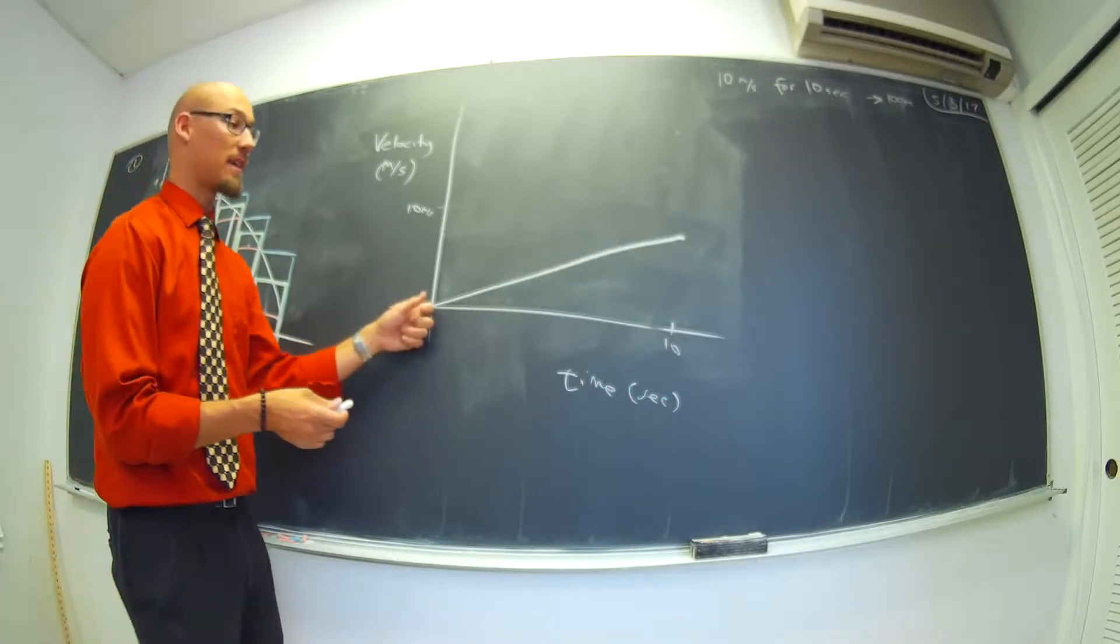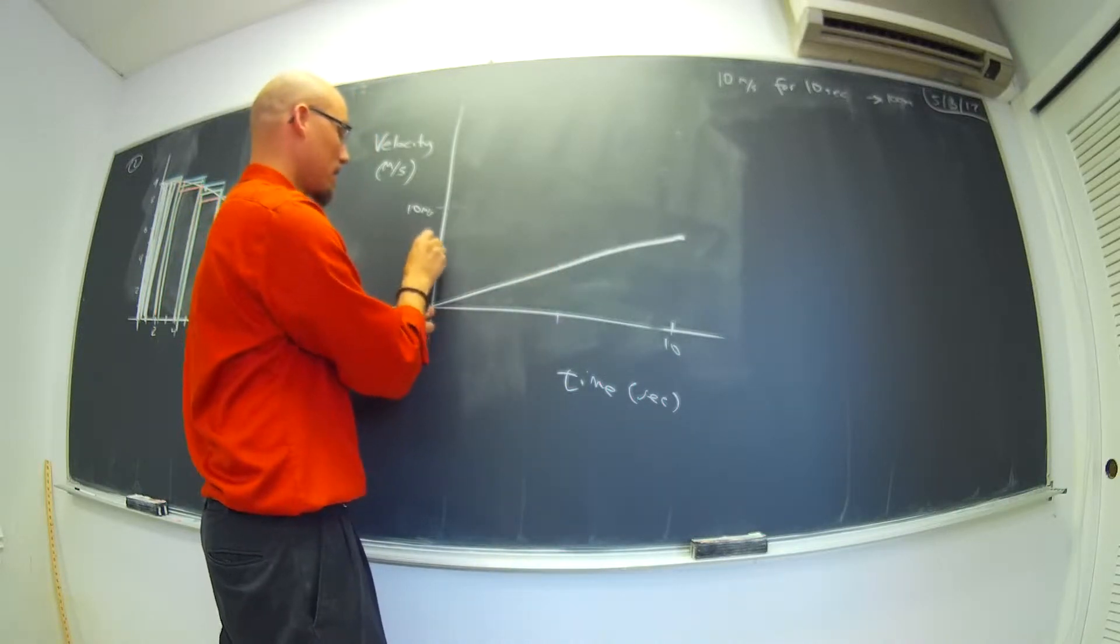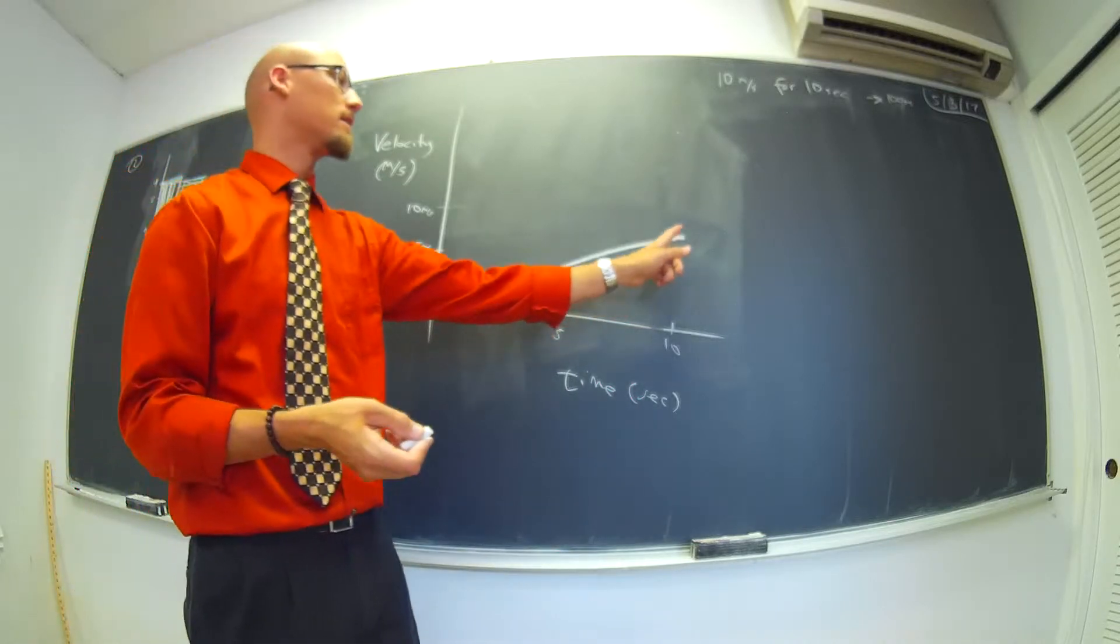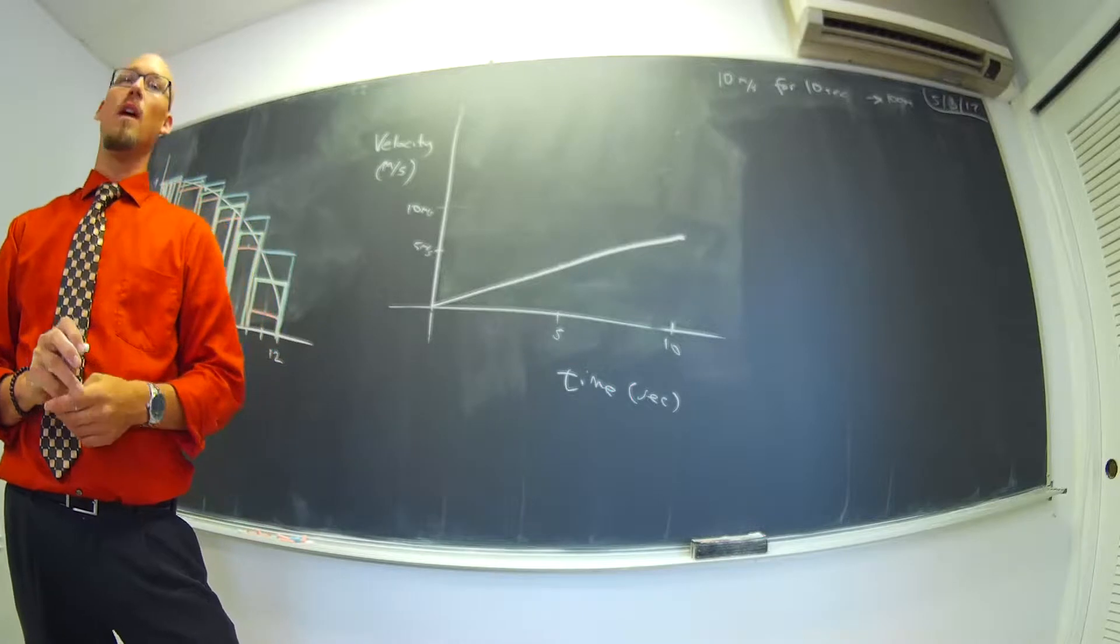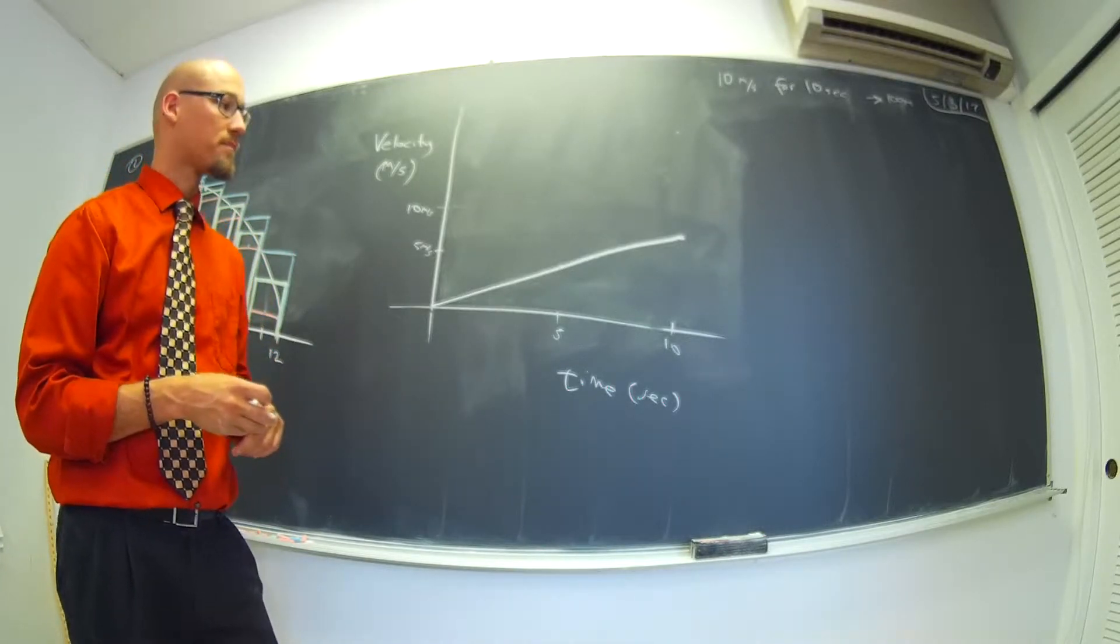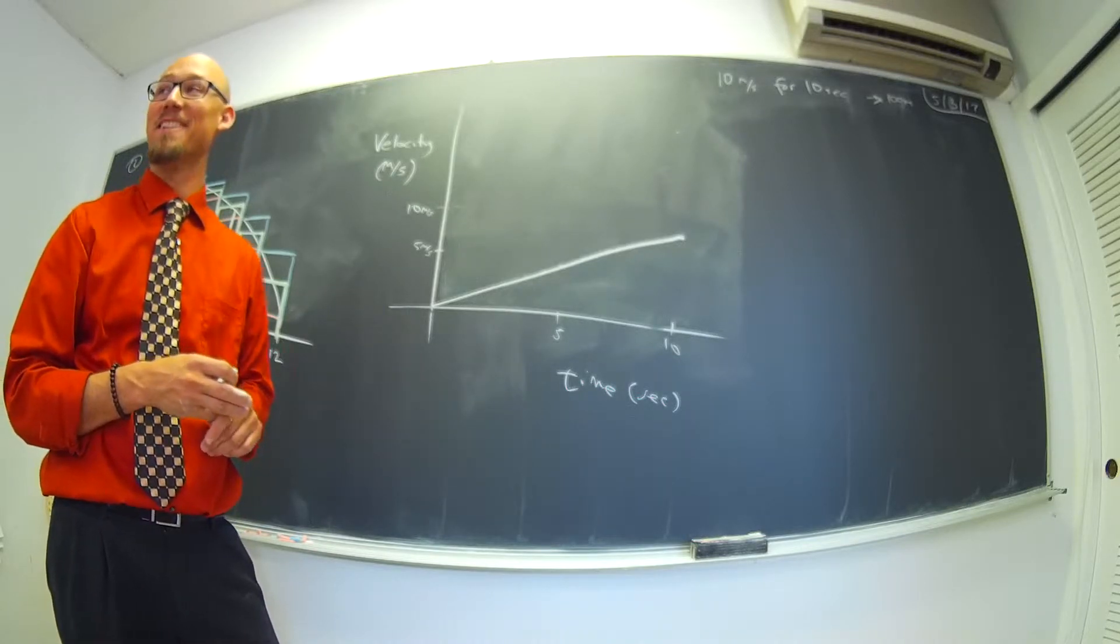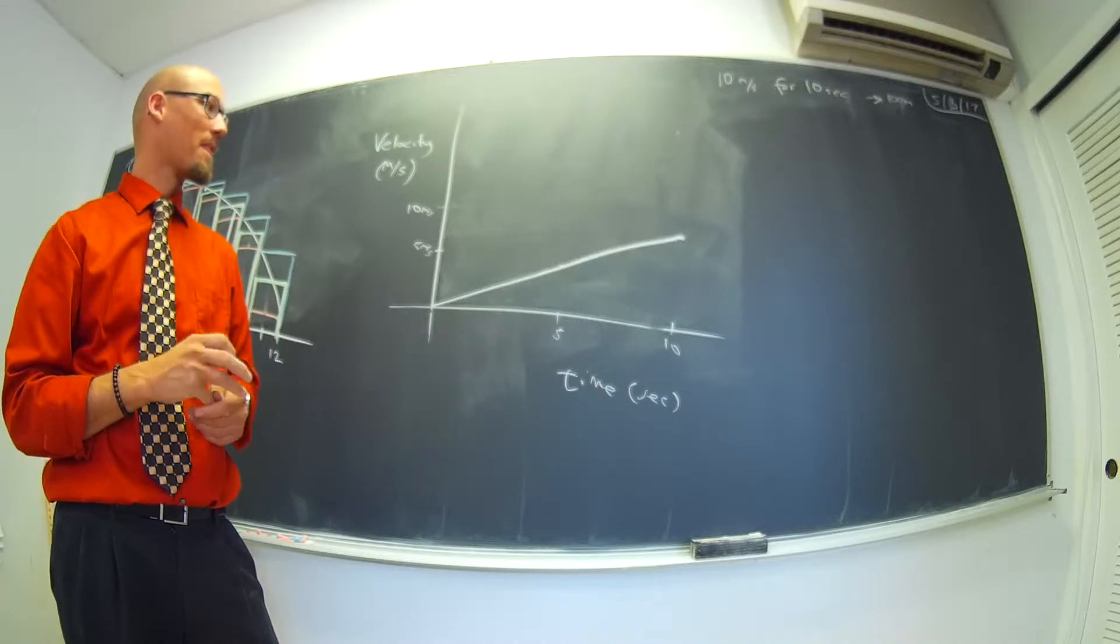So, you start at 0 meters per second. Somewhere in the middle here, you're probably doing 5 meters per second at 5 seconds, if I had to guess. And then, at the end of 10 seconds, you're doing 10 meters per second. What's the total distance that you traveled? 5 meters. Close. That would not be a very far drive. What did you just say? 50. Sorry.